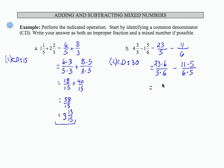If I multiply, I get 23 times 6 is 138, divided by 5 times 6 is 30, minus 11 times 5 is 55, over 30. The common denominator now allows me to combine the numerators. 138 minus 55 is 83, over 30.